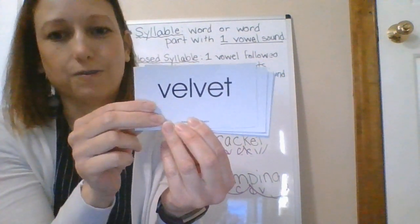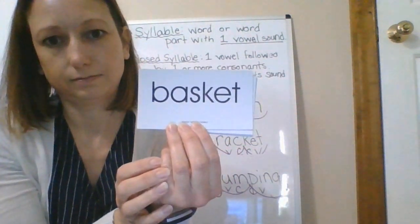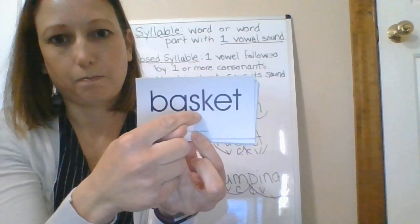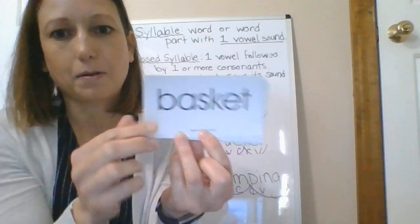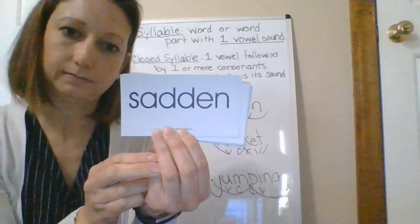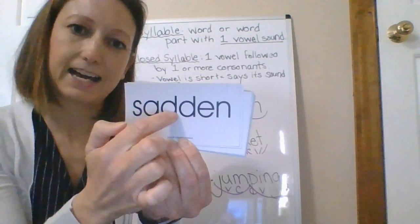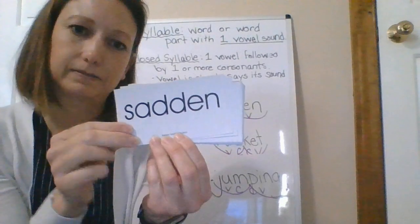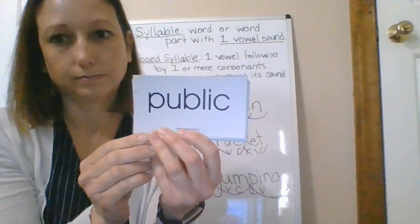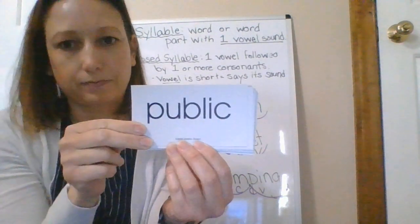Vel-vet — velvet. That's a type of material. Bas-ket — basket. The next word — you see a part of it you know — sad-im. Pub-lic — public.